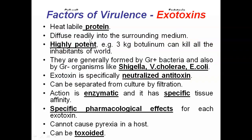Characteristics of exotoxins: they are heat-labile proteins that diffuse readily into the surrounding medium. They are highly potent — for example, just 3 kg of botulinum toxin, produced by Clostridium botulinum, is sufficient to kill all living things in the world. They are generally formed by gram-positive bacteria and also by gram-negative organisms such as Shigella, Vibrio cholerae, and E. coli. Exotoxins can be specifically neutralized by antitoxins and can be separated from culture by filtration. Their action is enzymatic, they have specific tissue affinity, and specific pharmacological effects for each exotoxin. They do not cause pyrexia.